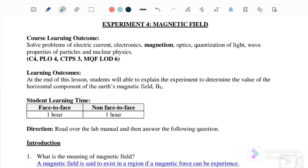Welcome back to my channel. Today we will discuss the pre-lab for Experiment 4: Magnetic Field. The learning outcome is at the end of this lesson, students will be able to explain the experiment to determine the value of the horizontal component of the Earth's magnetic field, B_E.